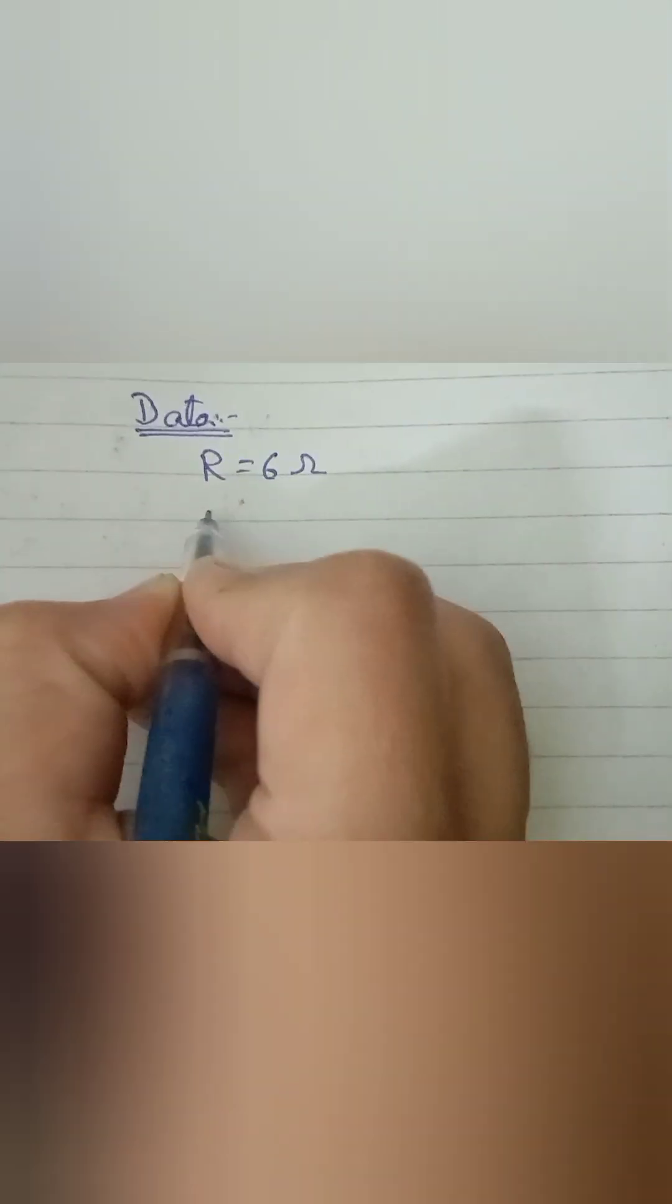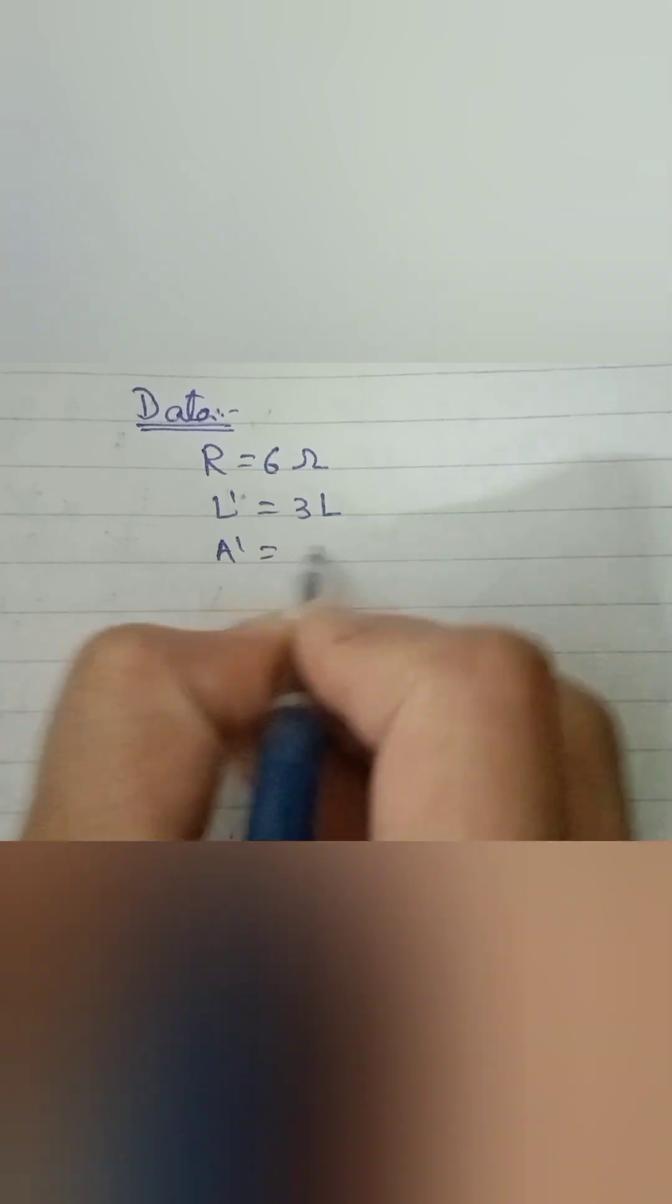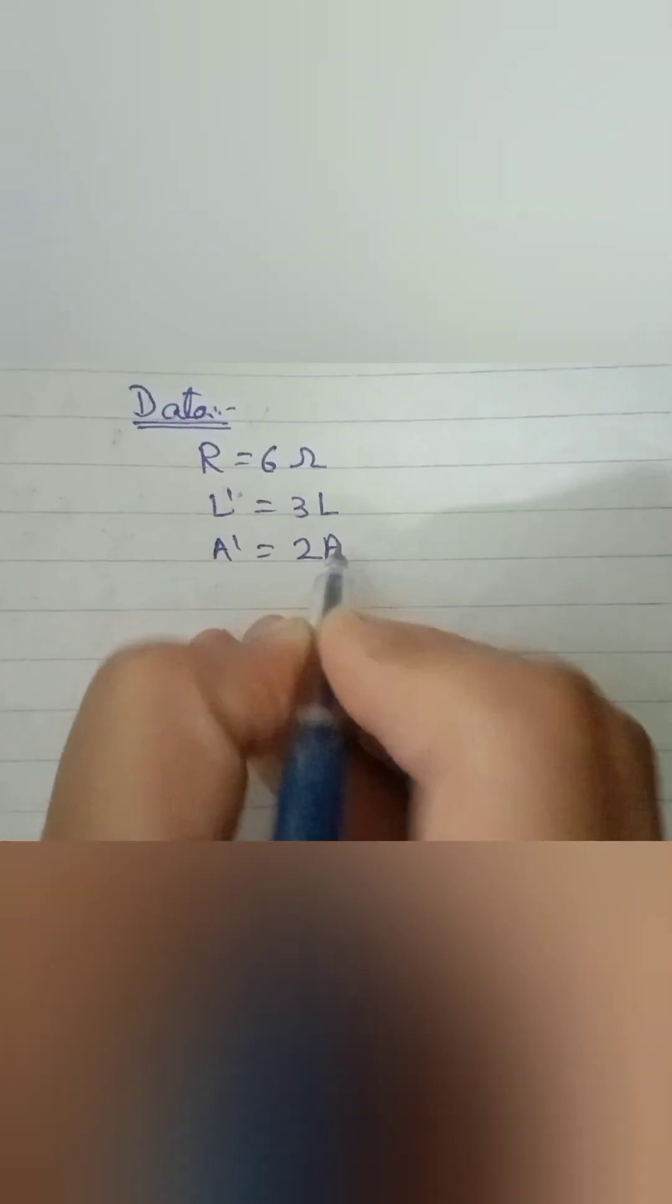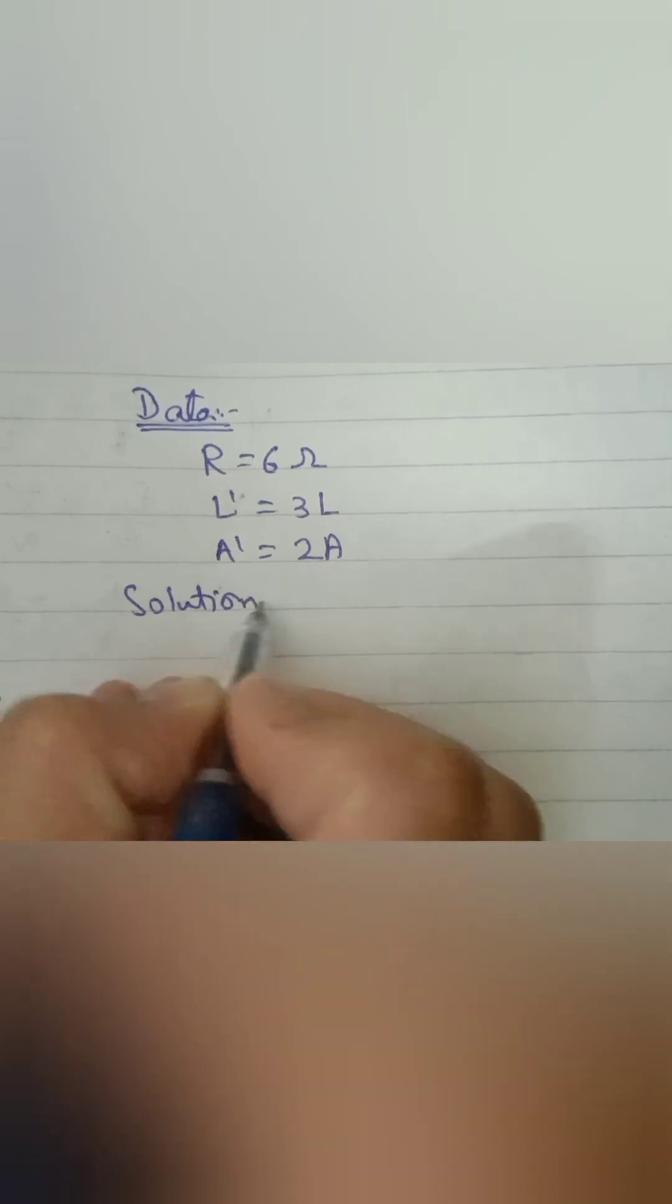We have given R equals 6 ohms, which is the resistance of wire, and new length is three times the original length, and new area is two times the original area. How do we solve it?